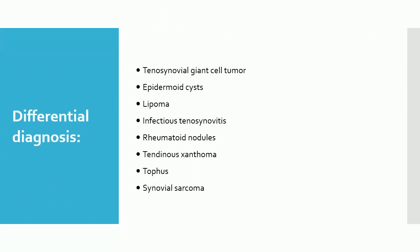Differential Diagnosis: The differential diagnosis of ganglion cysts of the wrist and hand includes conditions associated with nodular lesions of the hand, several of which are: Tenosynovial Giant Cell Tumor, Epidermoid Cysts, Lipoma, Infectious Tenosynovitis, Rheumatoid Nodules, Tendinous Xanthoma, Tophus, and Synovial Sarcoma.